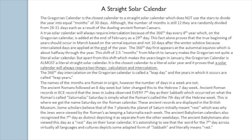But apart from this shift which makes the years begin in January, the Gregorian calendar is almost a literal straight solar calendar — it is the closest calendar to a literal solar year, and it proves that a solar calendar will always require two things: calculation and intercalation. The 366th day intercalation on the Gregorian calendar is called a leap day, and the years in which it occurs are called leap years. The names of the months are Roman in origin; however, the number of days in a week are not. The ancient Romans followed an eight-day week, but later changed this to the Hebrew seven-day week.